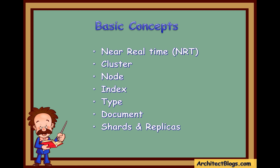For example, let's assume we are running a blogging platform and store all our data in a single index. In this index we may define a type for user data, another type for blog data, and a completely different type for comments data. Similarly, in a company you can have a type for associates, another type for vendors, and another for contractors — it differentiates the type of the documents.